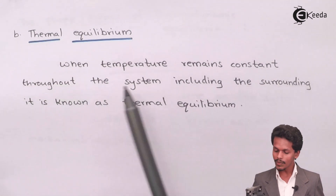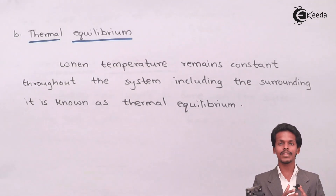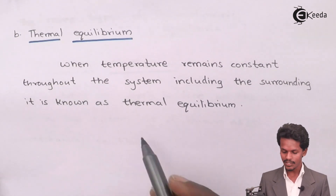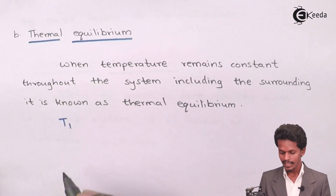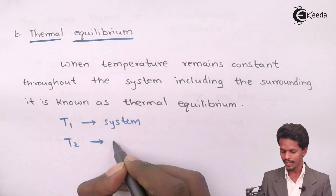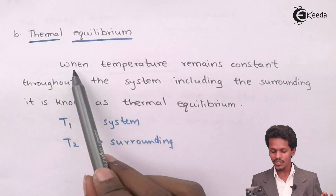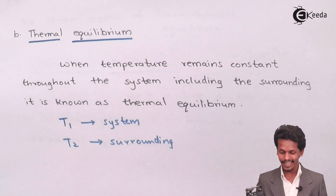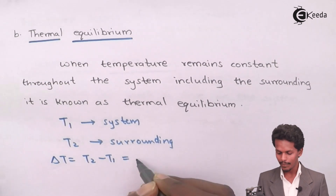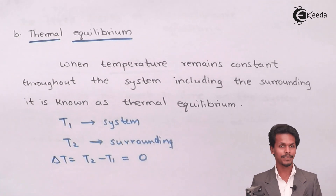The second type is thermal equilibrium — when temperature remains constant throughout the system including the surroundings, it is known as thermal equilibrium. Suppose the system has temperature T1 and the surroundings have temperature T2. Thermal equilibrium is maintained when delta T, that is T2 minus T1, equals zero.